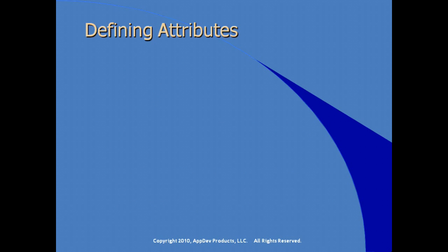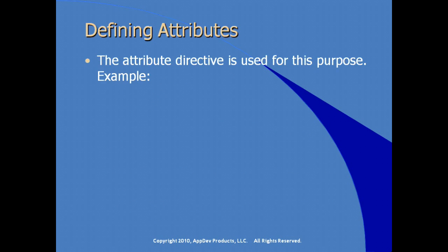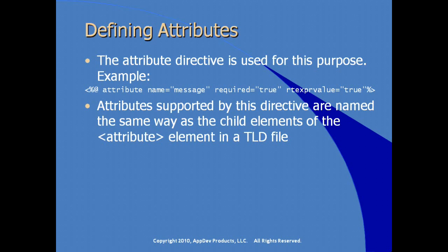In creating a tag file, there's also an attribute directive. The attribute directive is used for setting attributes, just as you would in a TLD file. You set the name, whether it's required, and various other attributes. Attributes supported by the attribute directive are named the same way as in the TLD file — for example, name, required, runtime expression value, and fragment.